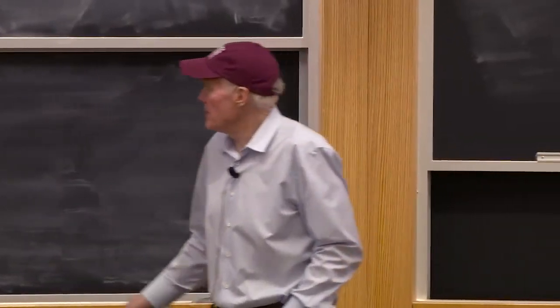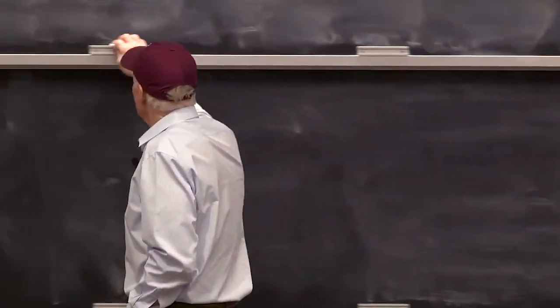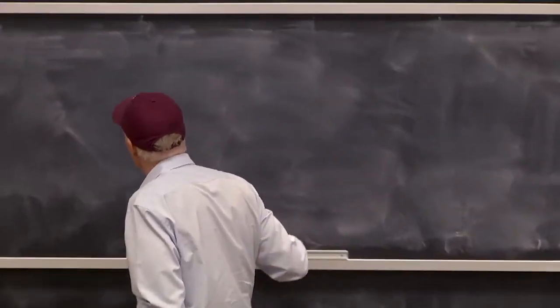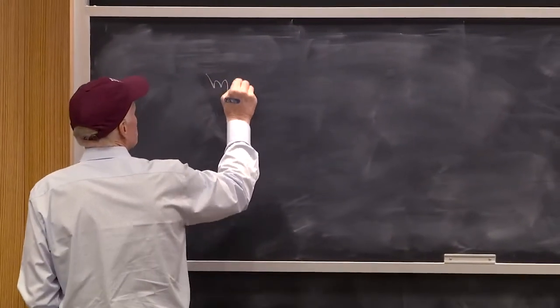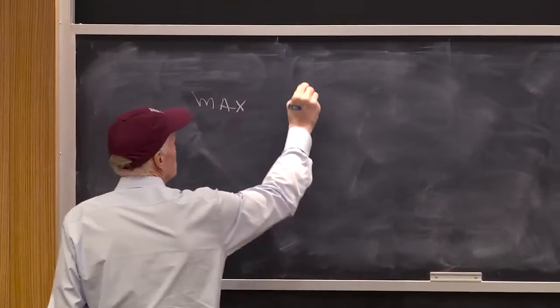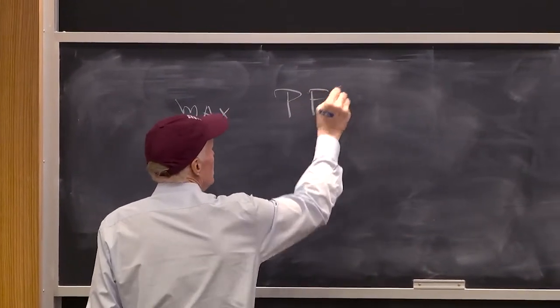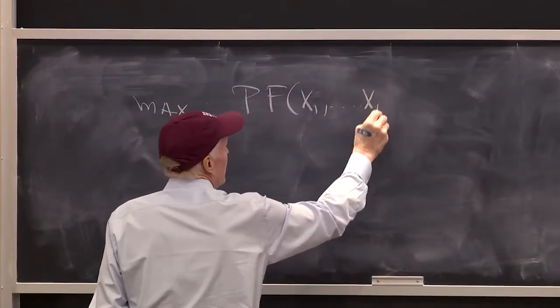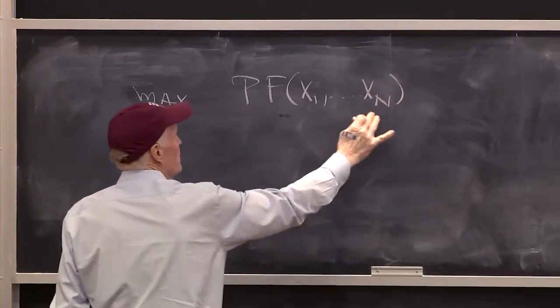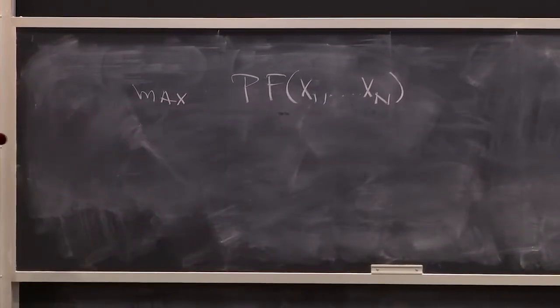But that's beside the point. Let's go back to talking about the firm. So we set it up last time. We're thinking about a firm. This firm is going to maximize its profits. And we said, well, its profits would simply be pf of x1 up to xn. So that's the amount of output they produce. And that's the production function f.